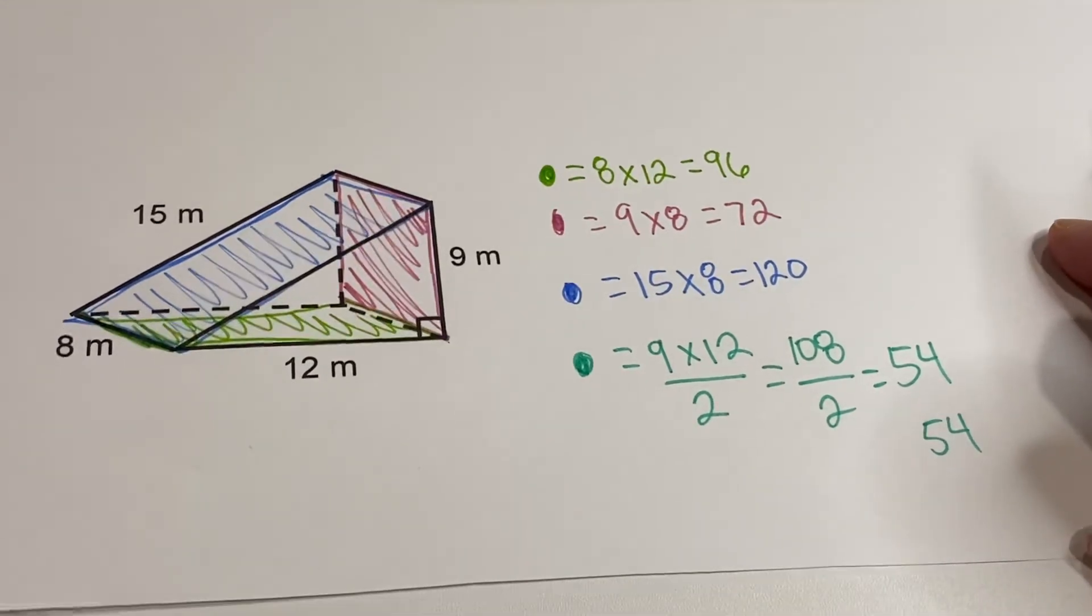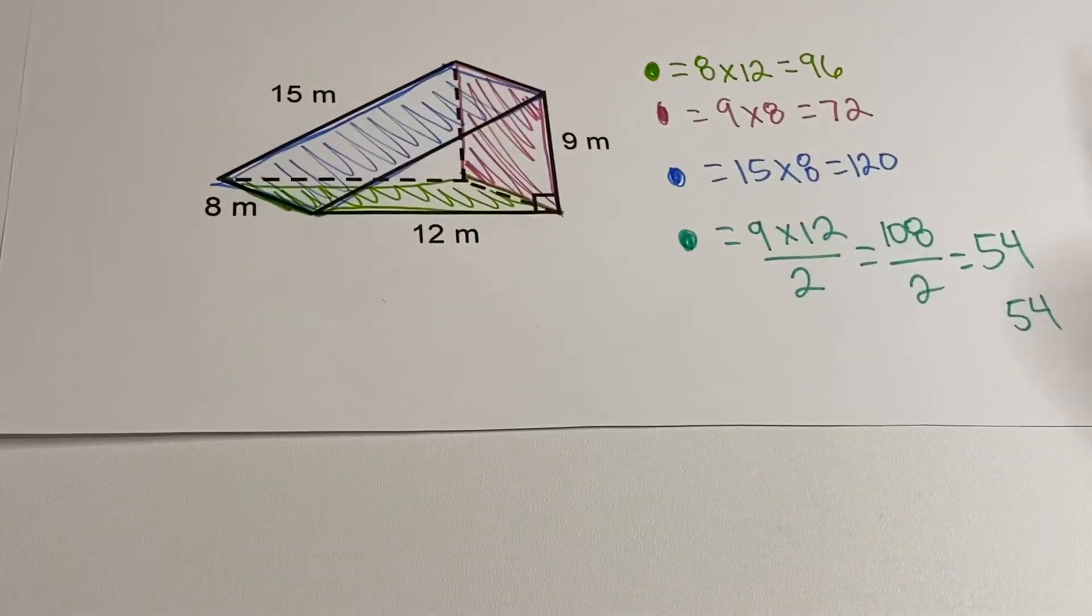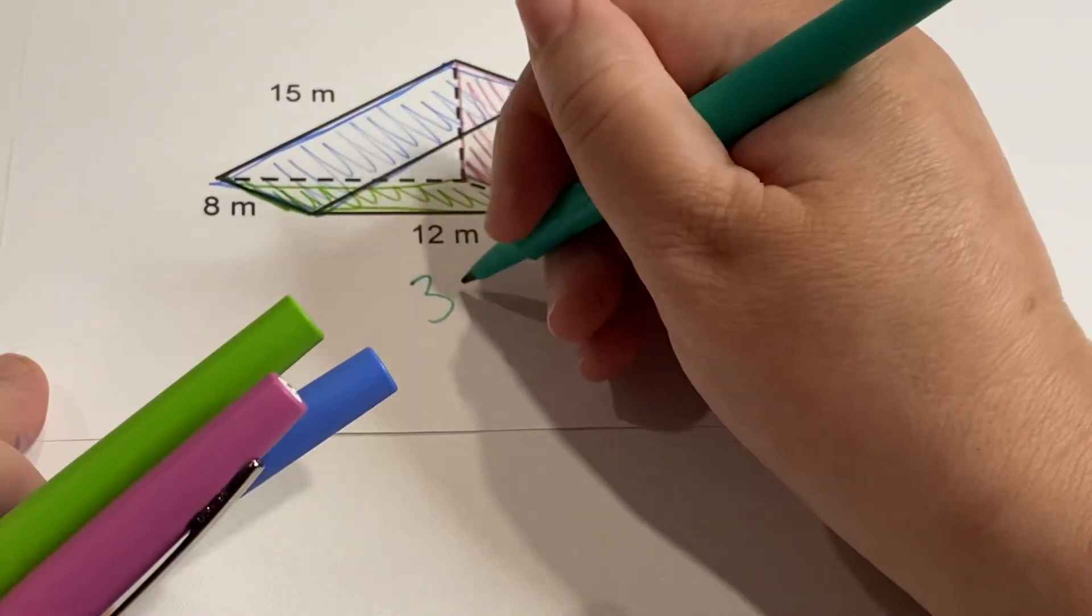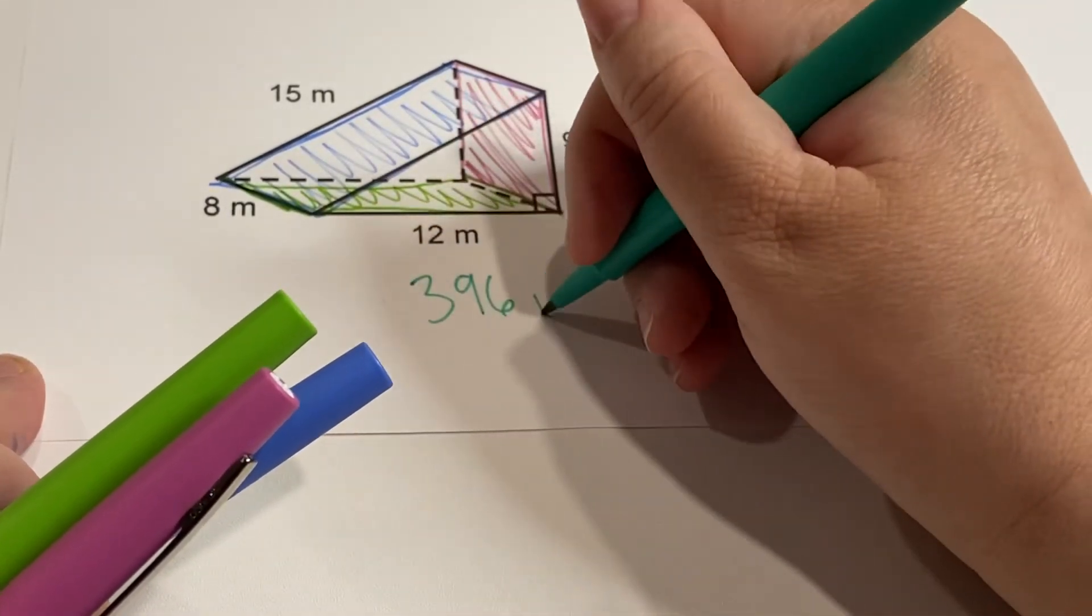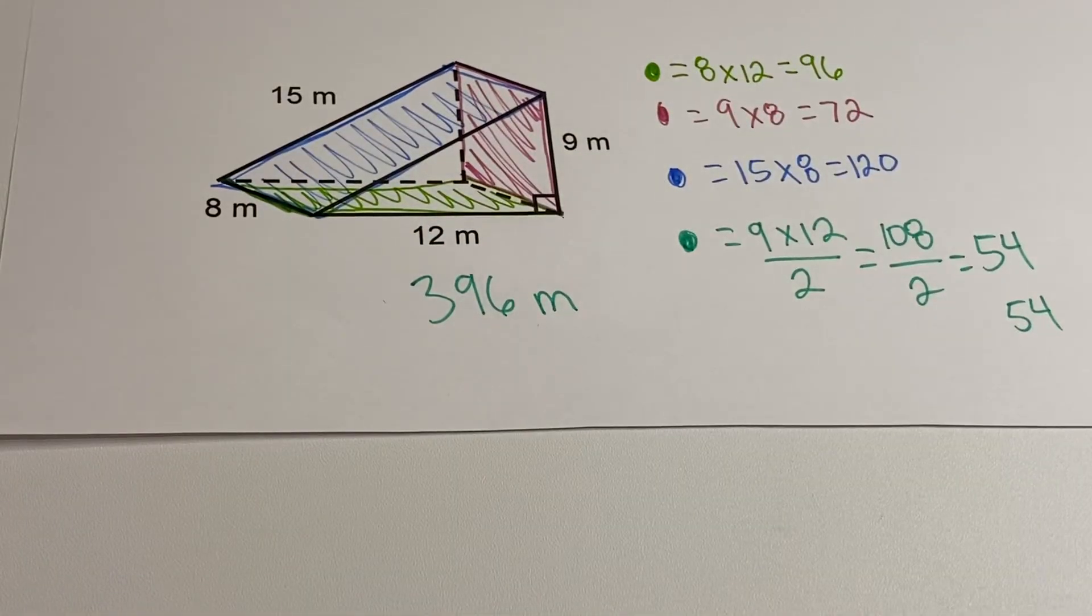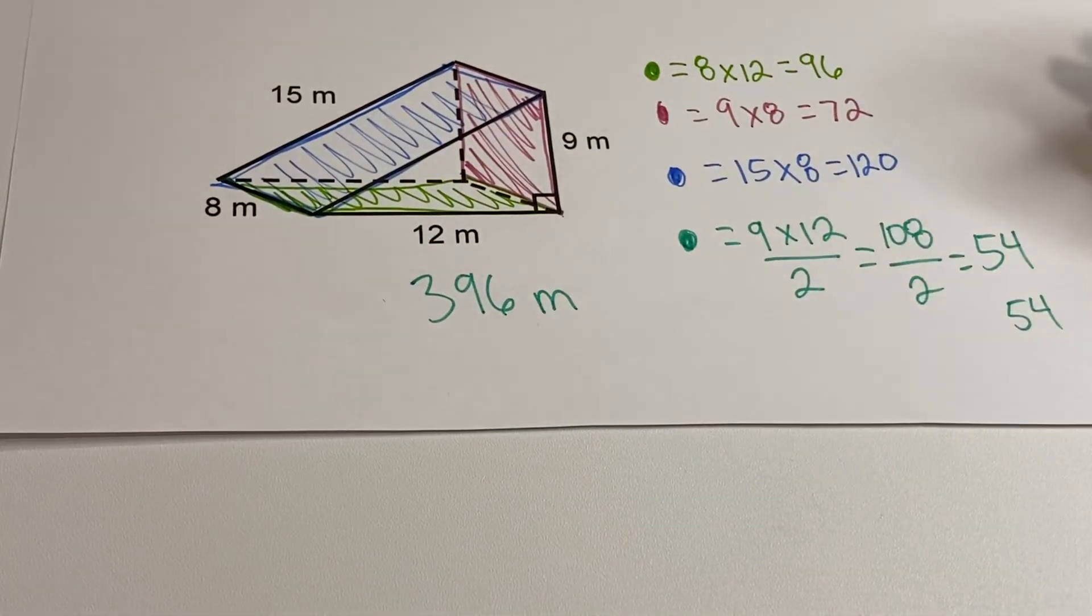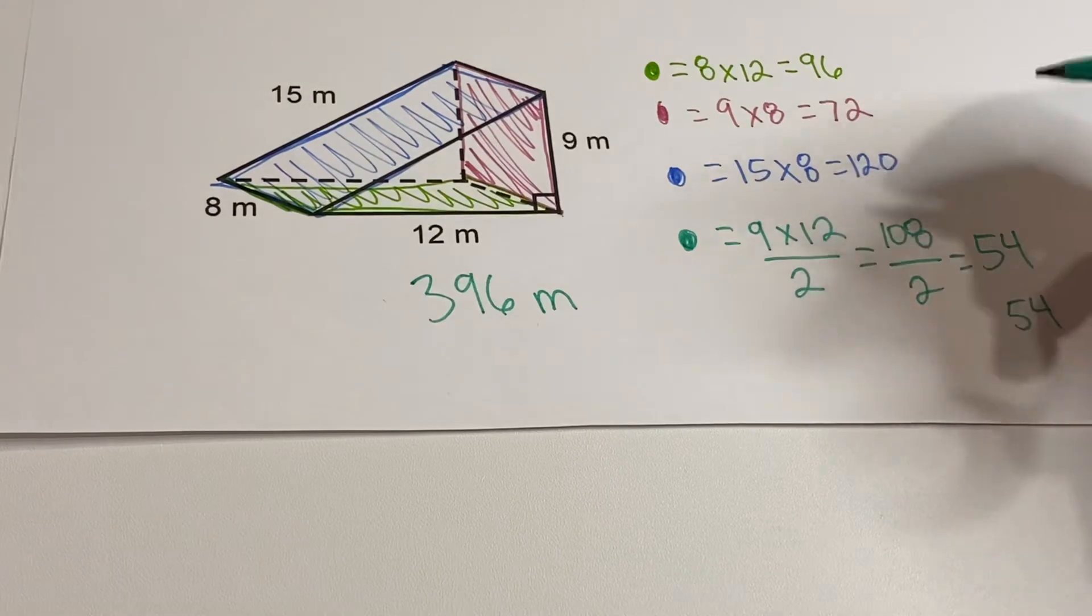When you're all done with that, you add them all together, and the surface area is 396. These are meters, and you're not measuring a distance, you're not measuring a volume, you're measuring an area, so it's going to be meters squared or square meters.